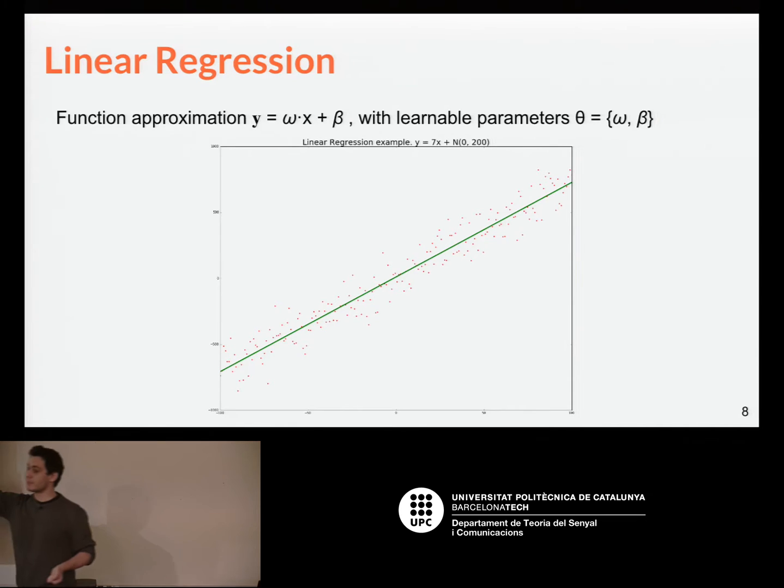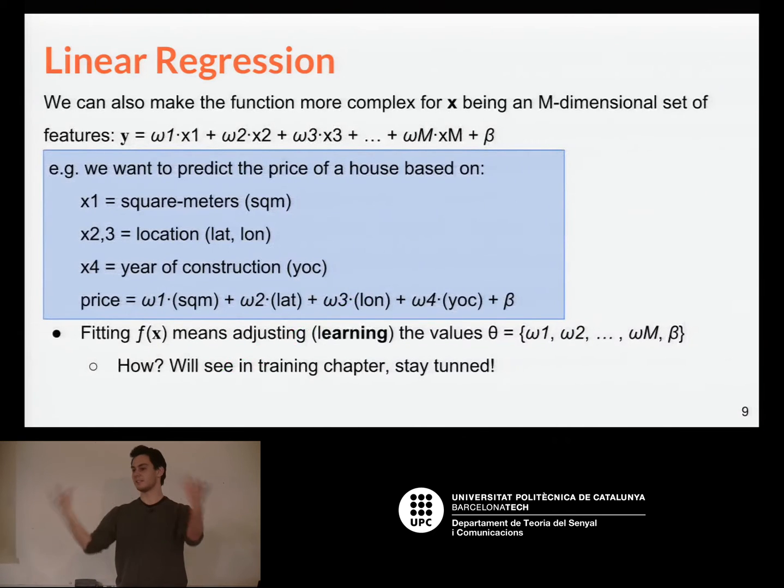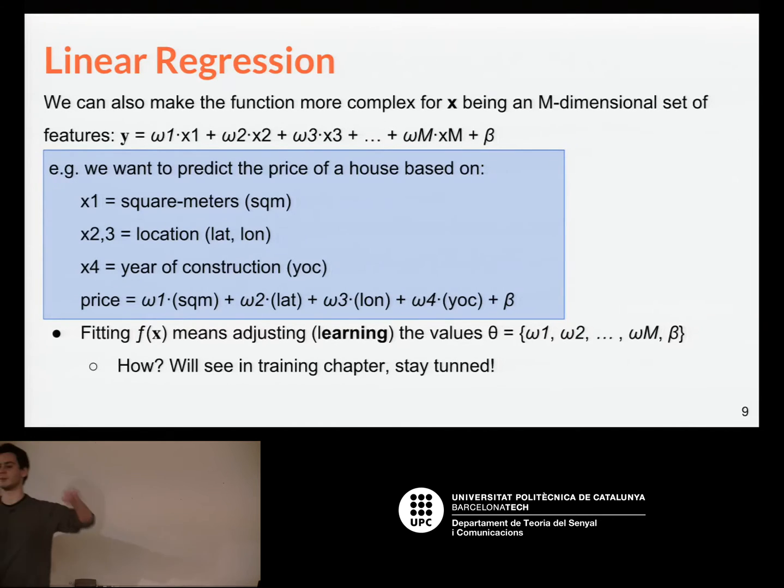And we can do so in 1D, for instance, with the weight and the bias. We estimate those parameters, then we fit this line, and we have some approach to what could be the value here, based on the examples given by the red points. This can be extended to M dimensions of inputs. It doesn't have to be just a line, but a hypersurface. And there, we can have, for instance, to predict the price of a house, based on square meters, location, year of construction, et cetera. We place the weights and the bias, and then we build this approximation of our data automatically in a learning phase.